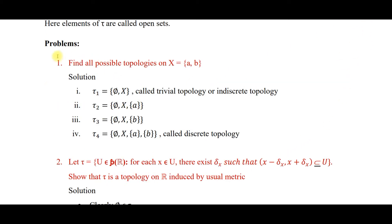Moving on to some problems. First one: find all possible topologies on X = {A, B}. We have to consider the three conditions. So first, τ₁ = {∅, X}, and this is the so-called trivial topology or indiscrete topology.